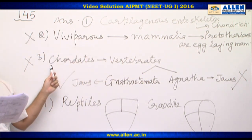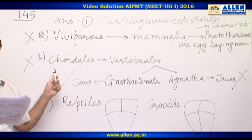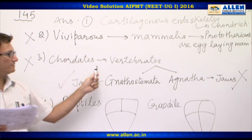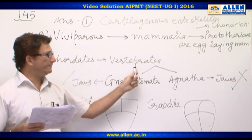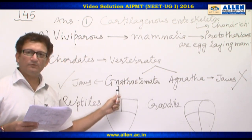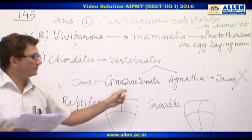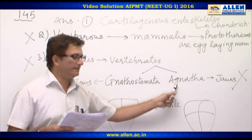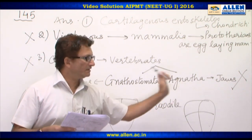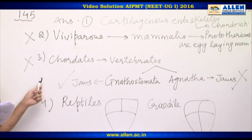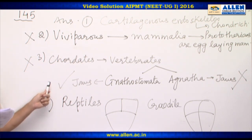The third option states: possess a mouth with an upper and lower jaw in Chordata. Chordata consists of vertebrates, which are divided into two categories: Gnathostomata (with jaws) and Agnatha (without jaws). Therefore, the third option is not the answer.